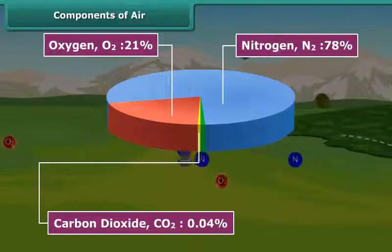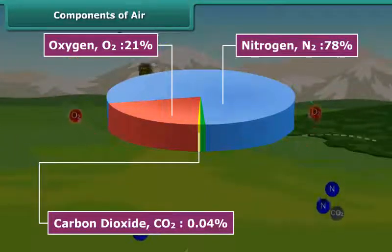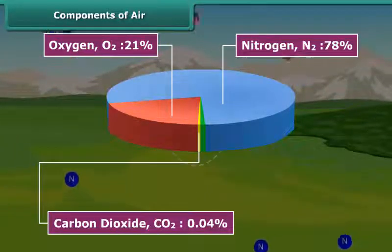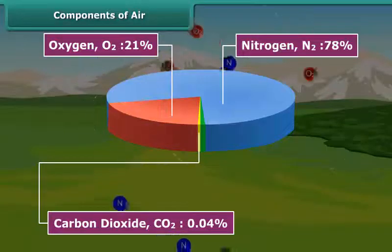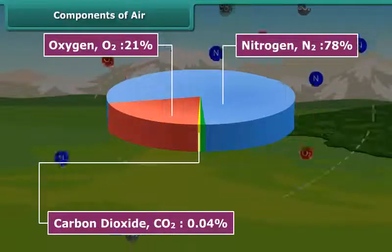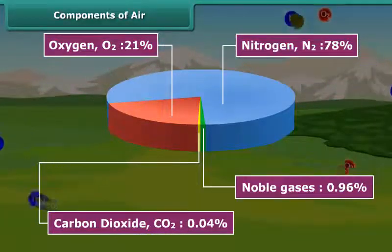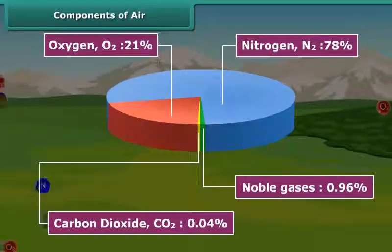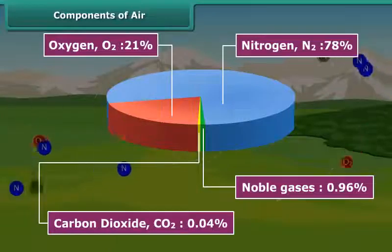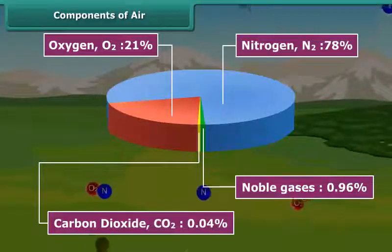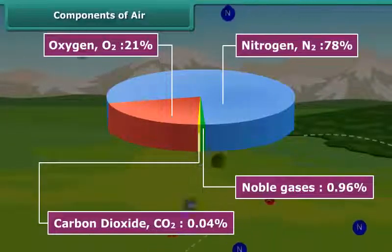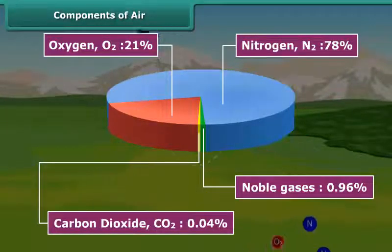Besides these three gases, air also contains water vapor, dust particles, and some other gases known as noble gases. Since the noble gases are present in negligible quantities, they are known as rare gases.